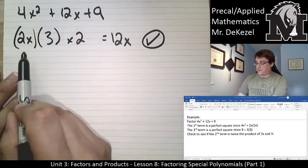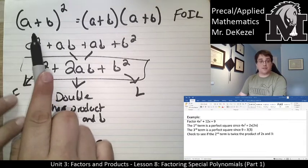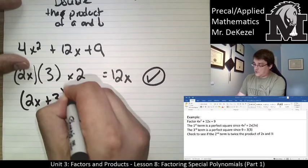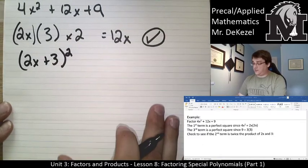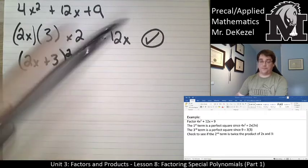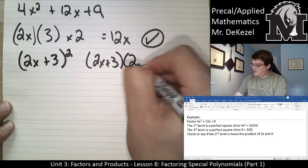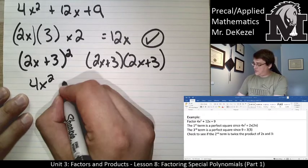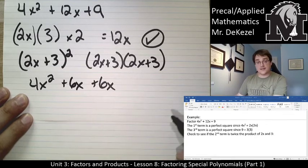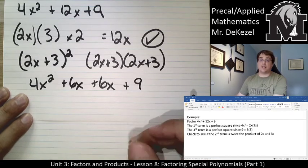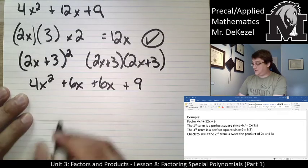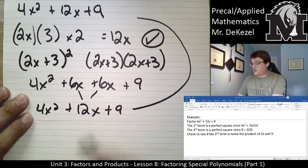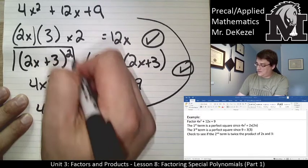We can take these two terms and write them in brackets, just like the (a + b) squared form. So we get (2x + 3) squared. Let's check by expanding: 2x plus 3 times 2x plus 3. We get 4x squared, then 2x times 3 is 6x, 3 times 2x is 6x, and 3 times 3 is 9. Combining like terms: 4x squared plus 12x plus 9 — which matches. So (2x + 3) squared is the answer.